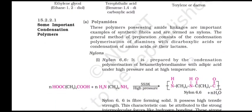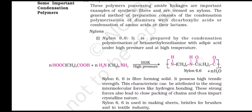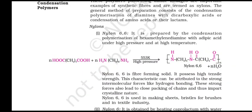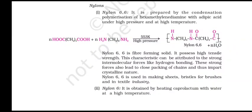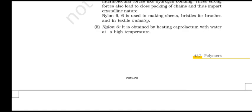Polyamides: these polymers possessing amide linkages are important examples of synthetic fibers and are termed nylons. The general method of preparation consists of the condensation polymerization of a diamine with a dicarboxylic acid, or condensation of amino acids or their lactams. Nylon 6,6 is prepared by the condensation polymerization of hexamethylenediamine with adipic acid under high pressure and at high temperature. Nylon 6,6 is a fiber-forming solid possessing high tensile strength. This characteristic can be attributed to the strong intermolecular forces like hydrogen bonding, which lead to close packing of chains, imparting crystalline nature. Nylon 6,6 is used in making sheets, bristles for brushes and in the textile industry. Nylon 6 is obtained by heating caprolactam with water at a high temperature.